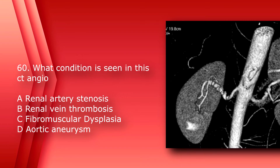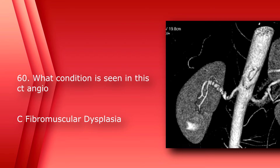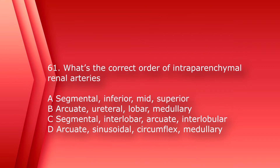Number 60: What condition is seen in this CT angio? A) renal artery stenosis, B) renal vein thrombosis, C) fibromuscular dysplasia, or D) aortic aneurysm. The answer is C, fibromuscular dysplasia — you can see the classic string of pearl sign.